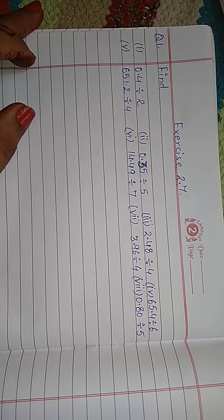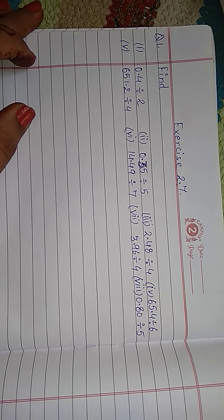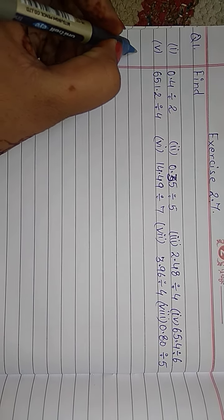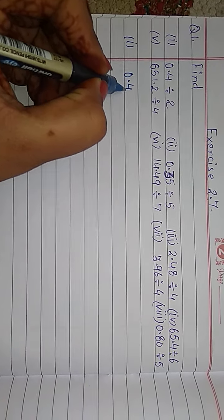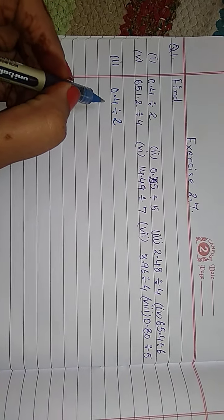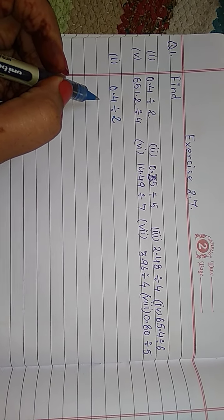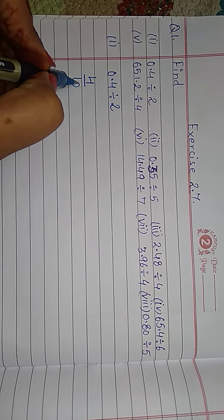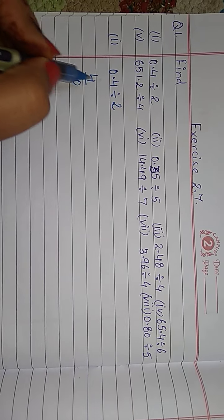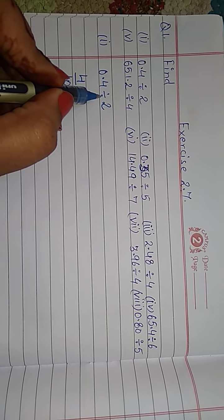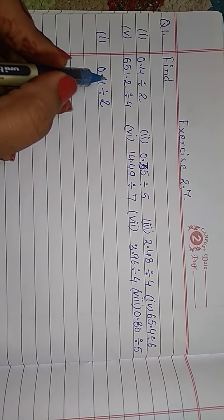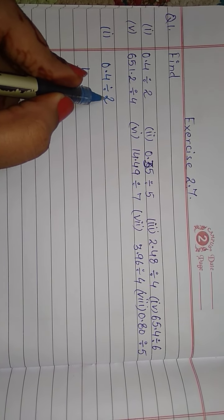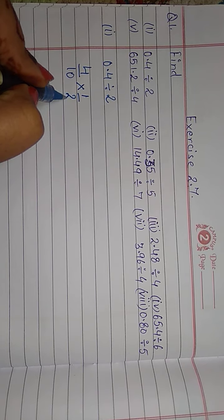In last exercise we done multiplication but in this division. Now, first part is 0.4 divided by 2. First, remove decimal. We convert into fraction form. Means 4 by 10 because after decimal only one digit. And take the reciprocal of this division sign to multiply sign. And digit is its reciprocal. If here 2 given, its reciprocal is 1 by 2.